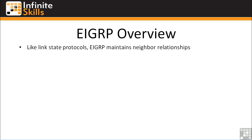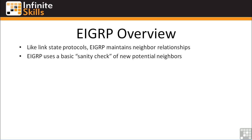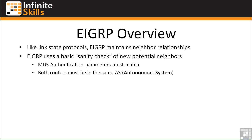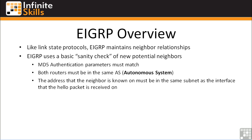EIGRP maintains neighbor relationships and uses a basic sanity check of new potential neighbors. When an EIGRP router comes up and starts multicasting its hello packets, the neighbor router performs basic checks to make sure it won't corrupt its routing tables with garbage routes. Those basic sanity checks are: MD5 authentication parameters must match — you're not required to use MD5, but if you're not using it on one interface you can't be using it on any other, so they must match either present or not present. Both routers must be in the same autonomous system, which is simply a number you assign to the EIGRP system. Routers in different autonomous systems cannot become neighbors. The address the neighbor is known on must also be in the same subnet as the interface that the hello packet is received on.